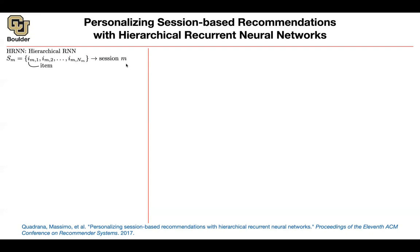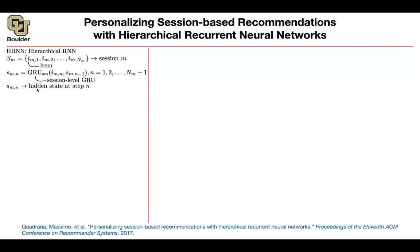The user clicked on item one, item two, up to the last item, and n depends on the actual session, so n could be shorter or longer depending on the session number. We introduced this idea before of session-level GRUs. Here is your hidden state h_m — you don't really need to worry about it, this is constant everywhere. What is going in is the current item the user is interacting with or clicking on, and the history from the previous time step. So n minus one is going to give you the hidden state in the next time step.